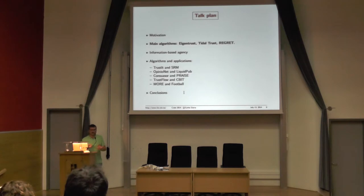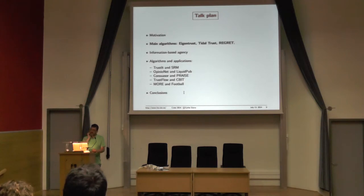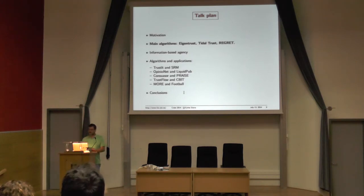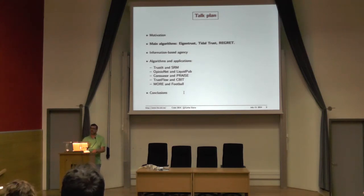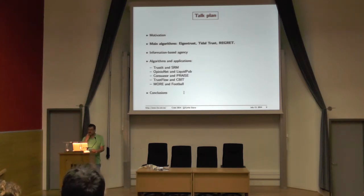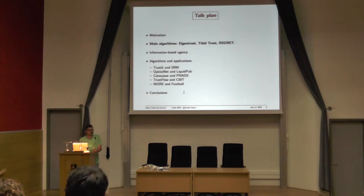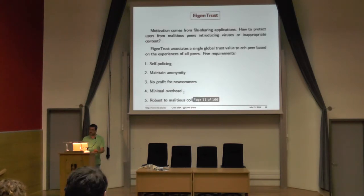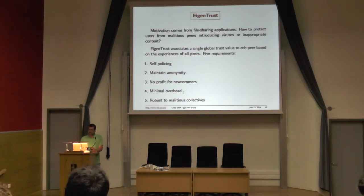I hope the notion of trust is more or less clear, how it is understood in the literature. Let's go into three models: AgenTrust, TidalTrust and Regret. I will explain them in simple terms — you can go to the literature for more details. I will give you the idea of these models. Please question me if there is something you don't understand, because as I said it's the first time I'm explaining this stuff, so I'm not sure if I will pass the information in the correct way.